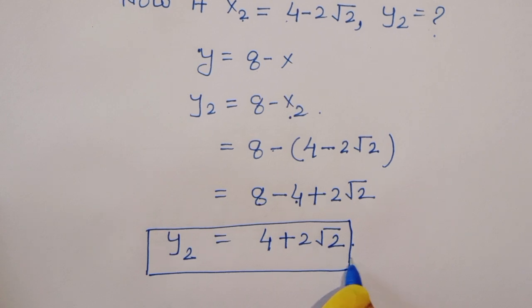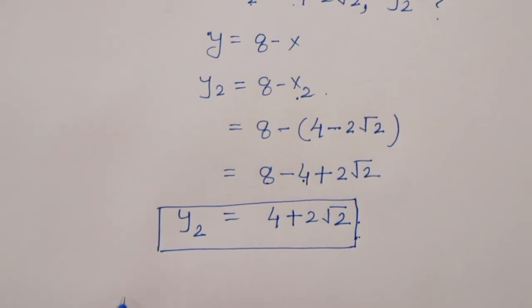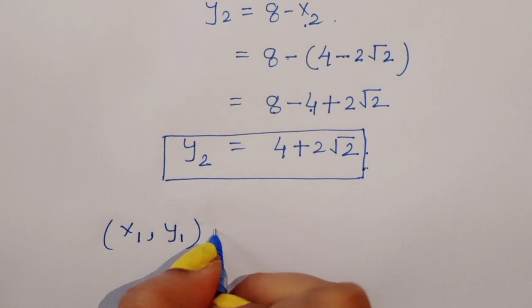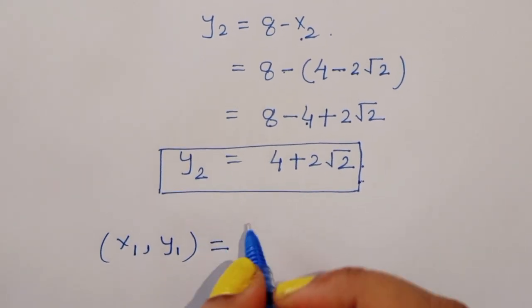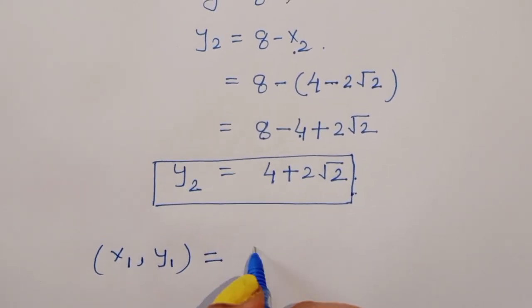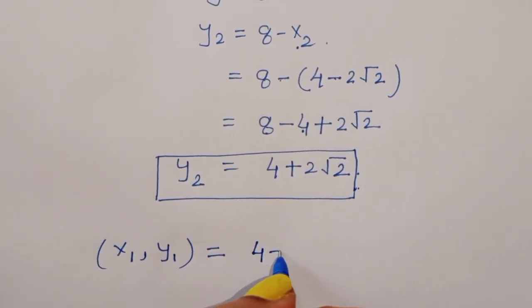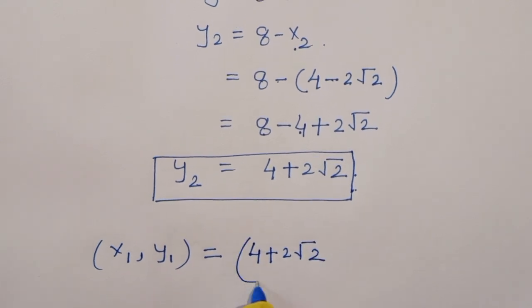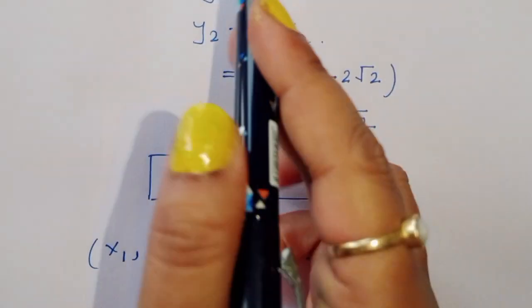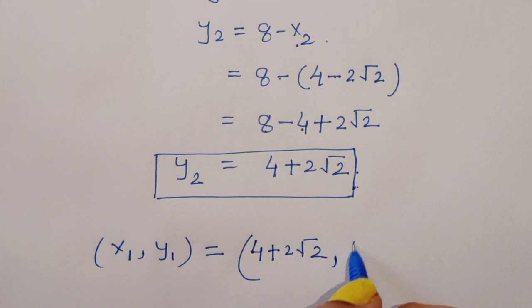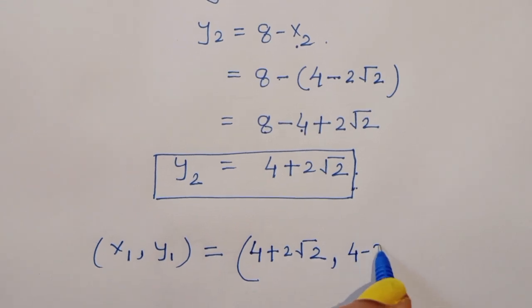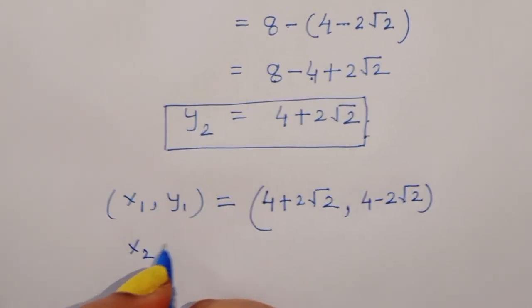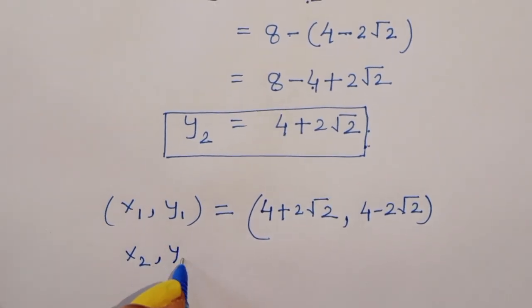So we have two solution pairs: x1 y1 — when x1 is equal to 4 plus 2 root 2, y1 is equal to 4 minus 2 root 2.